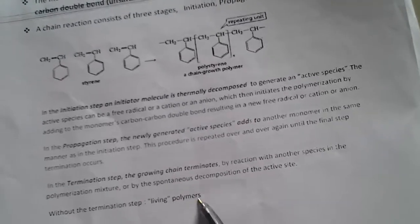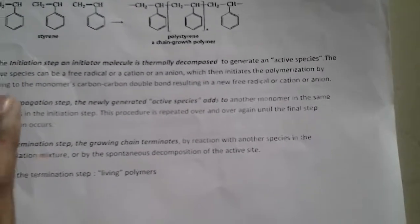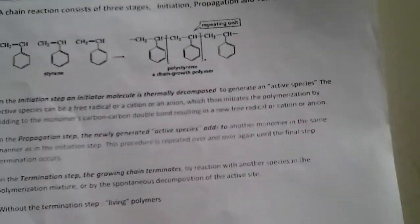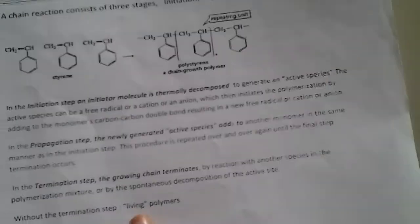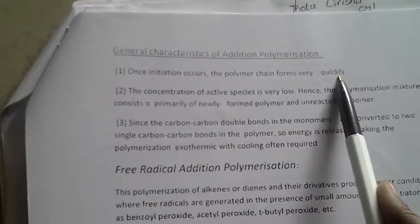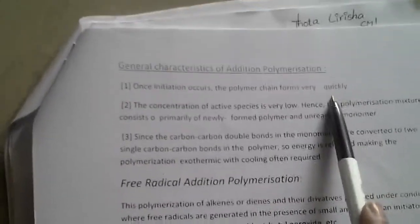Some polymeric chains have a termination step, while a few do not. Without the termination step, the polymers are called living polymers because they have no stop. Its characteristics: once initiation occurs, the polymer chain forms very quickly.